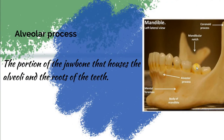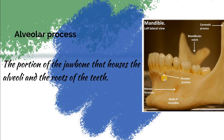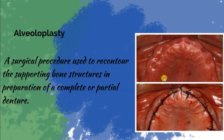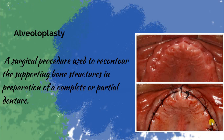The alveolar process is that part of the jawbone that houses the alveoli and the roots of the teeth. Alveoloplasty is a surgical procedure used to re-contour abnormalities in the jawbone and supporting structures, to be prepared for partial or complete denture or any reconstruction procedure that needs a well-contoured alveolar process.